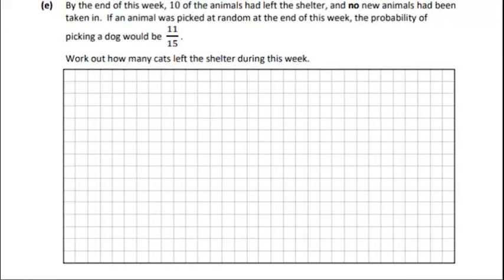Part E. By the end of the week 10 of the animals have left the shelter and no new animals have been taken in. So we have 10 reduction. So that means the total will be 30. So let's write that in. So the total now, the new total is 30. So we have the probability of a dog is equal to 11 over 15 and we need to find how many cats are left. So probability of dog is equal to 11 over 15. So that's not how many dogs, that's a proportion, it's a fraction.